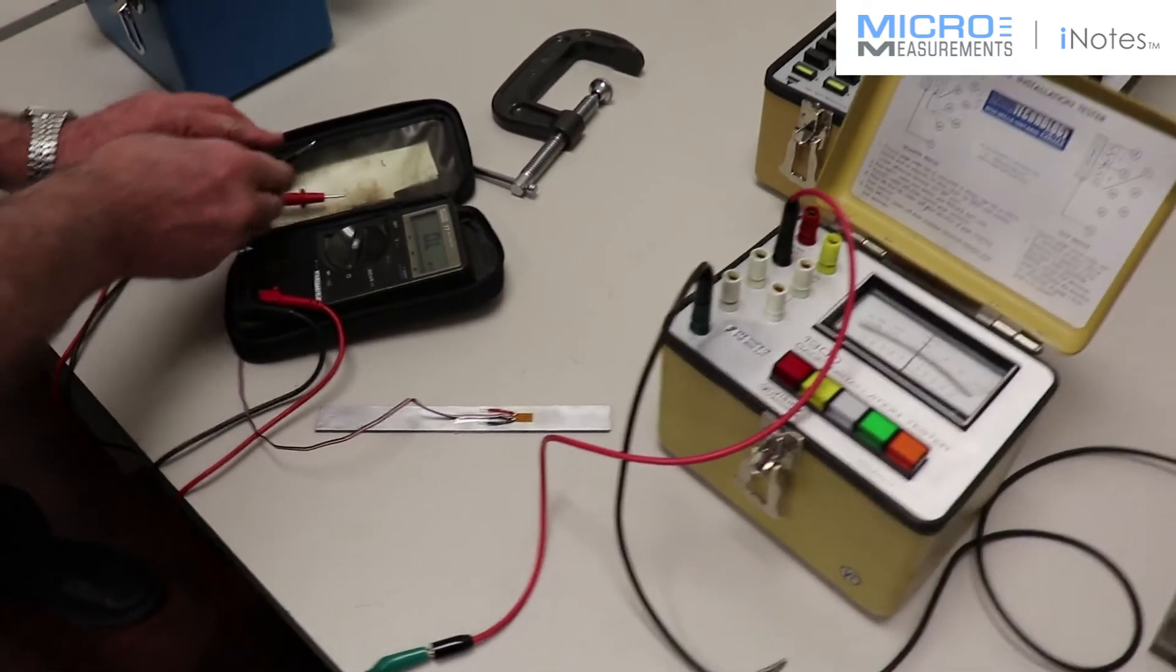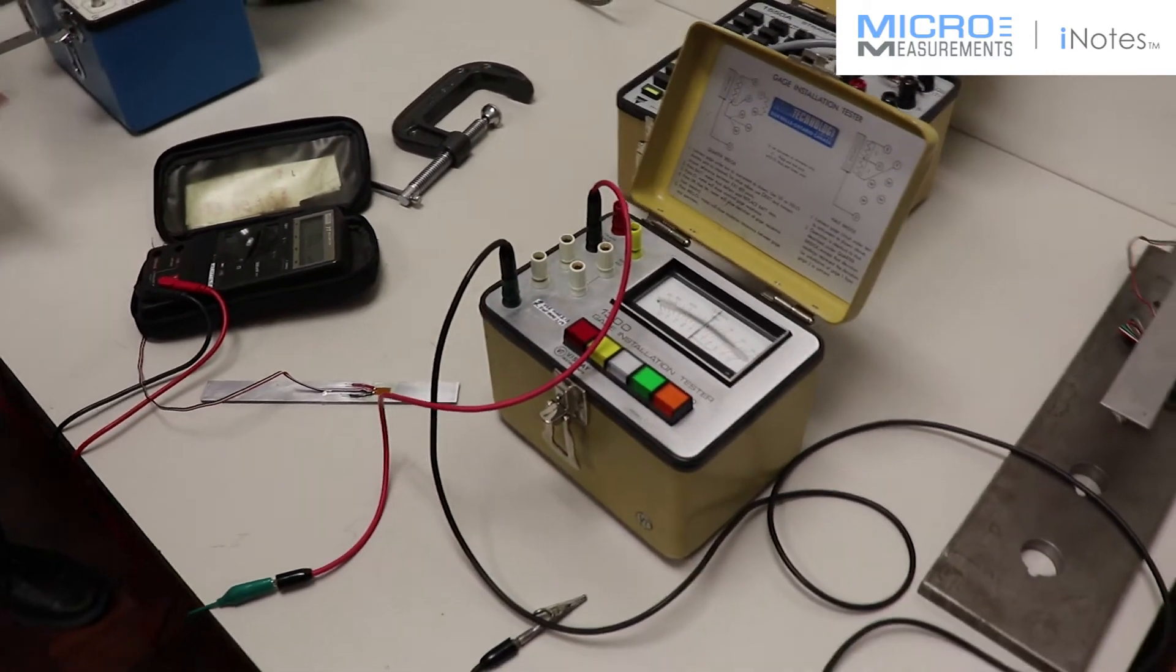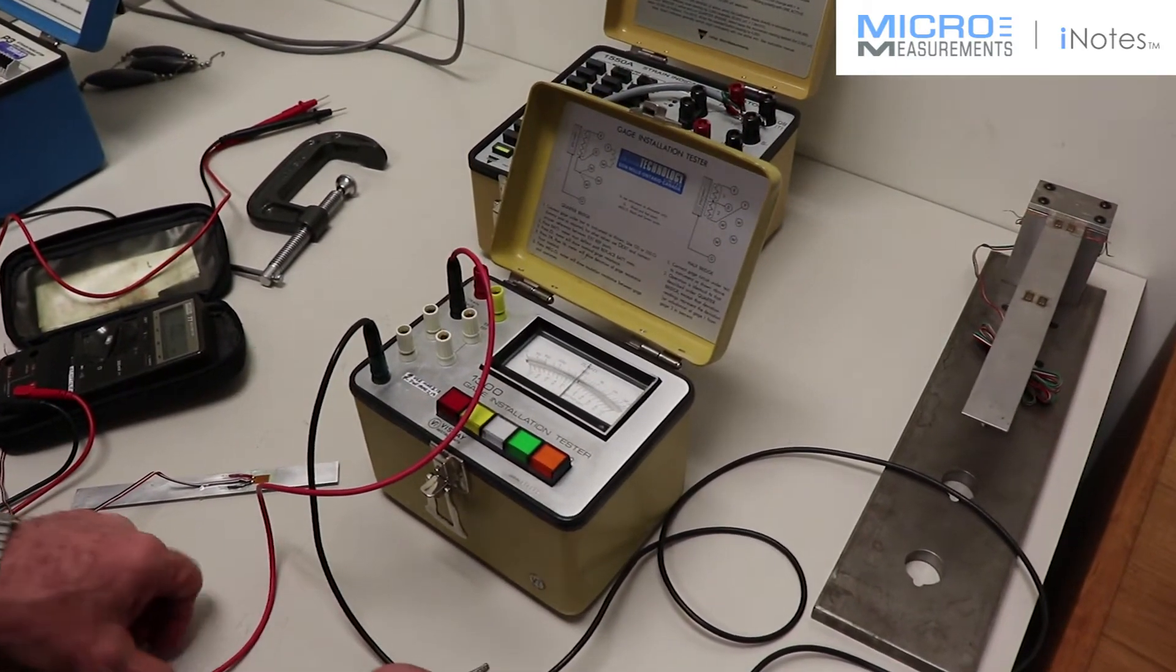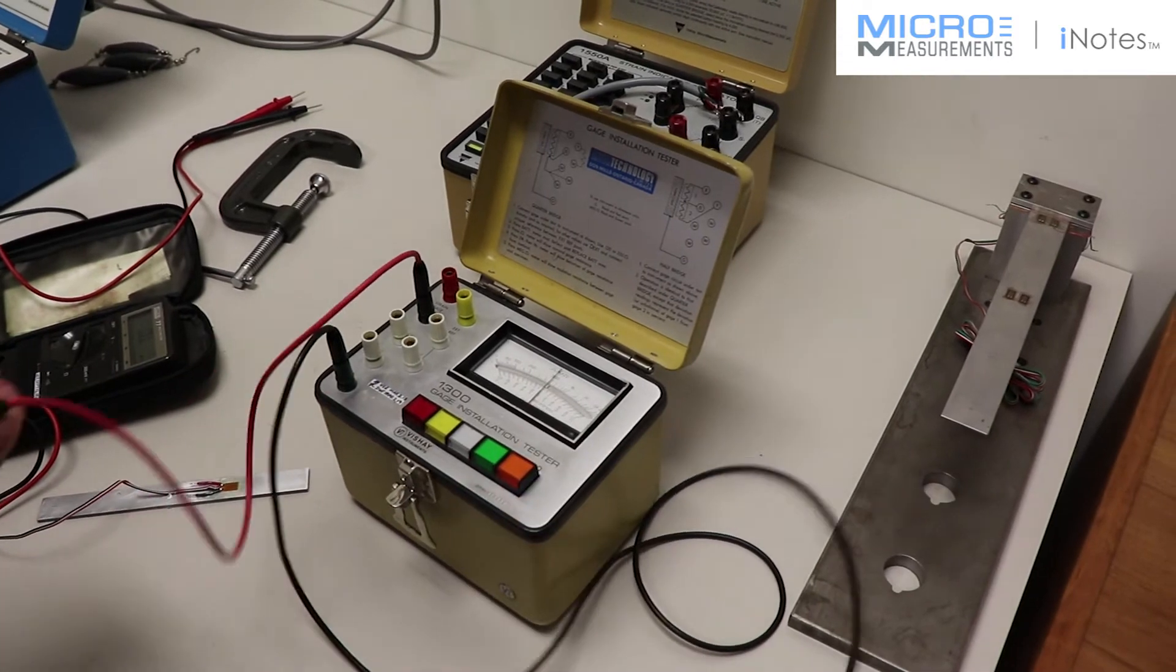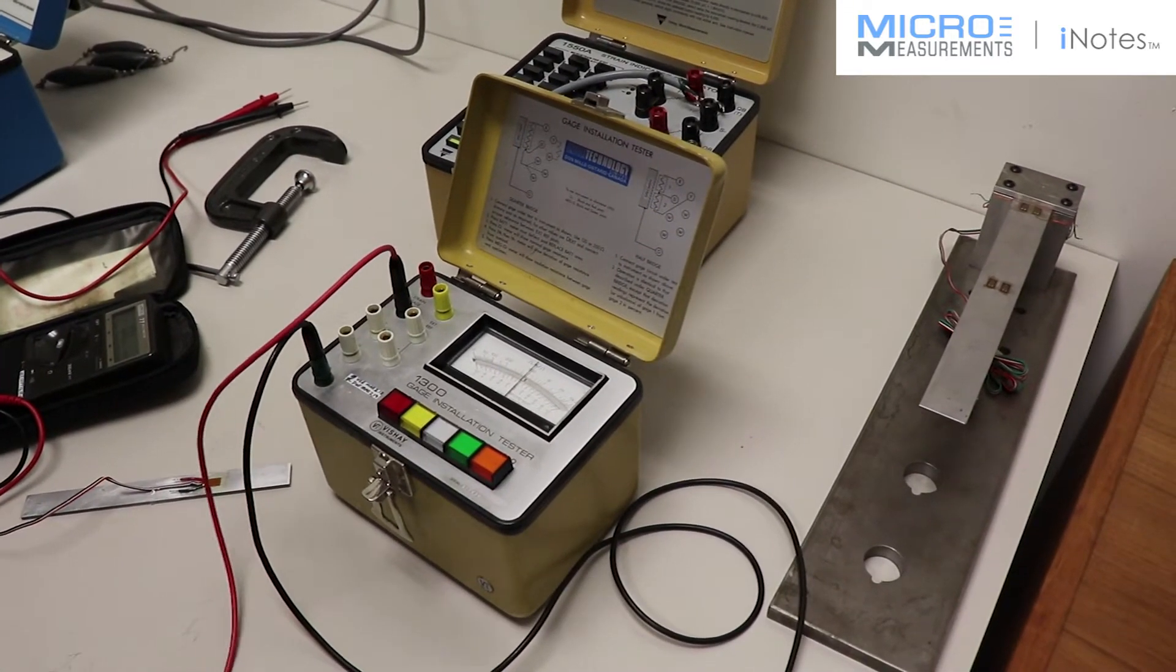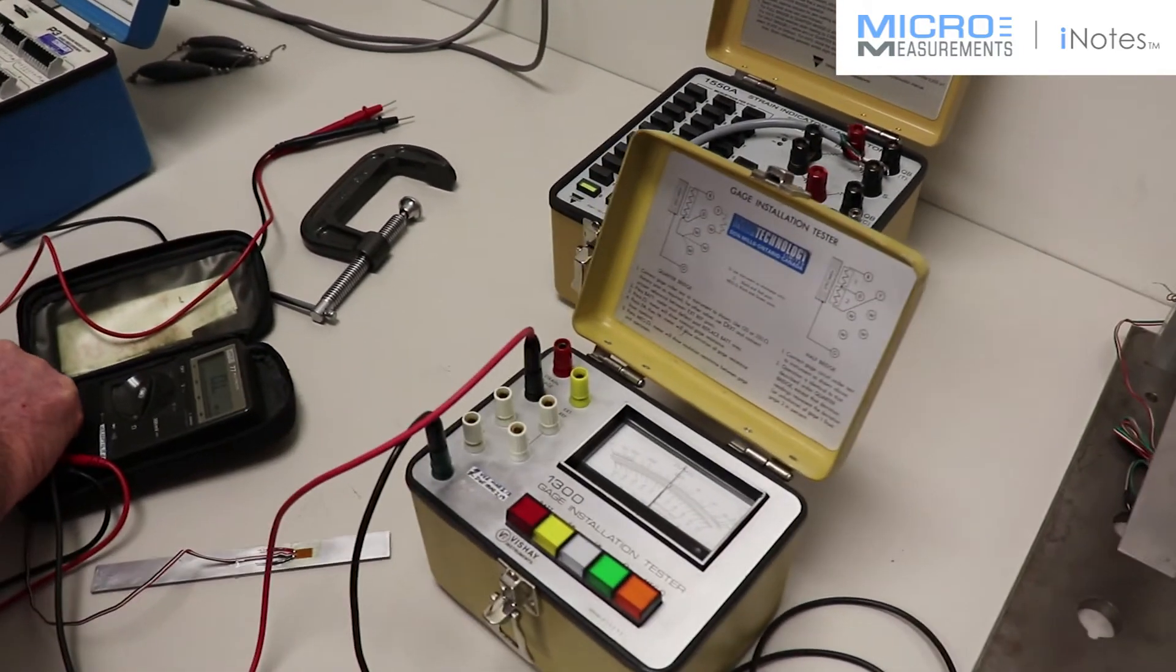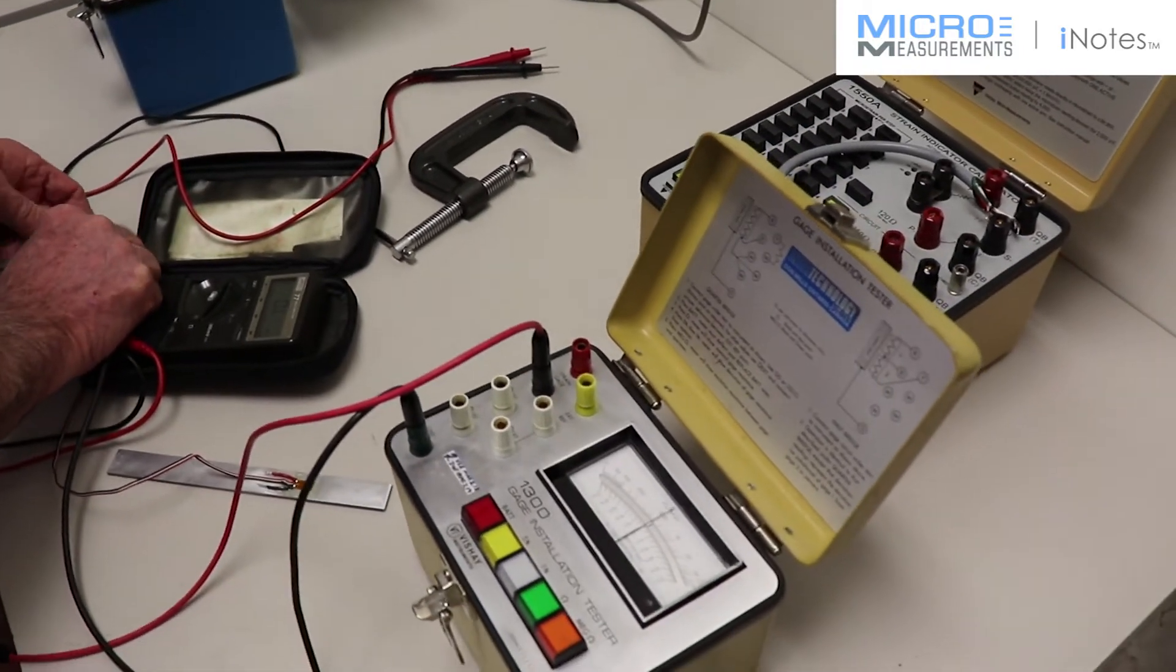if I take the standard strain gauge tester, which is made by Measurements Group. We have the 1300 gauge tester where we have the two leads. The one lead I'm going to attach to the electrical circuit. Here we have it.